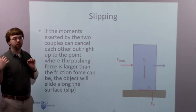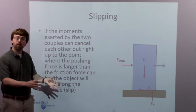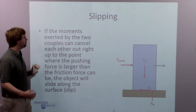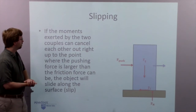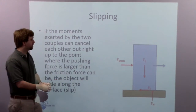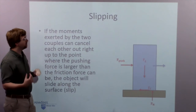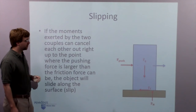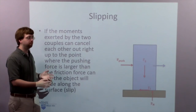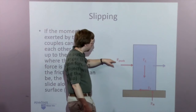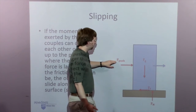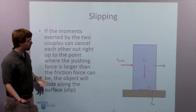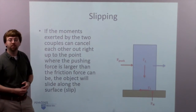So to determine whether it's going to slip or tip based on pushing on this fridge, I need to look at both possible scenarios. For slipping, we're going to deal with that first. If the moments exerted by the two couples can cancel each other out right up to the point where the body slips or starts to slide relative to the surface, then it's going to slip. To determine the pushing force required to make this whole thing slide, I basically ignore those moments at first and figure out the pushing force that would just make it slide. Assuming impending motion, if this pushing force exceeds the static coefficient of friction times the normal force, that is the point where the pushing force will make this whole thing slide.